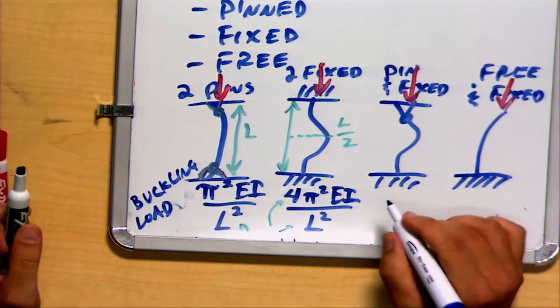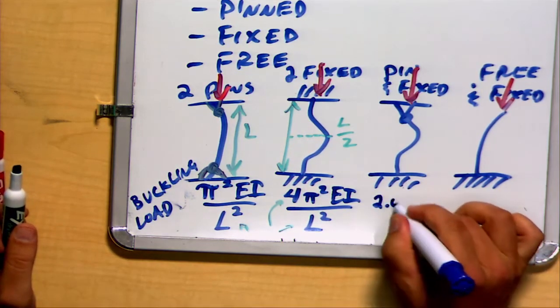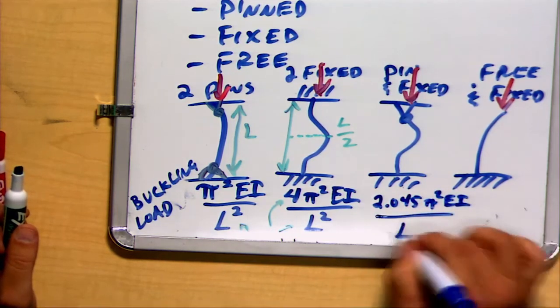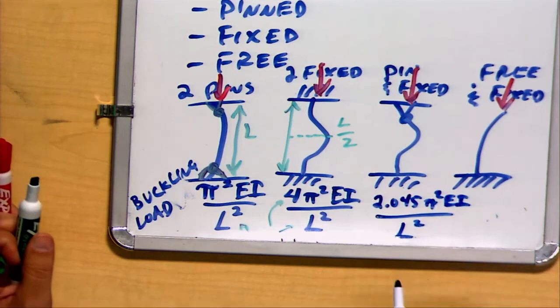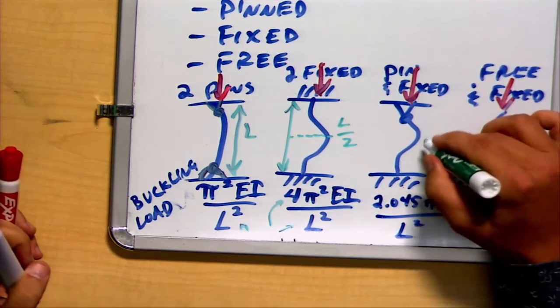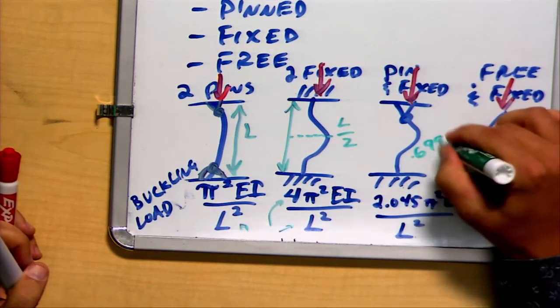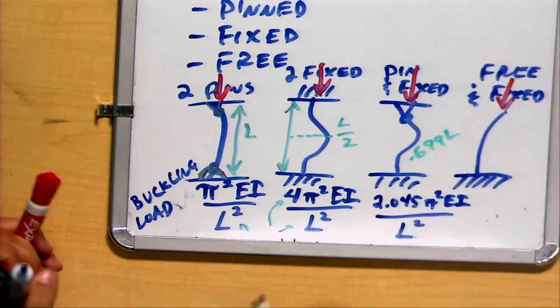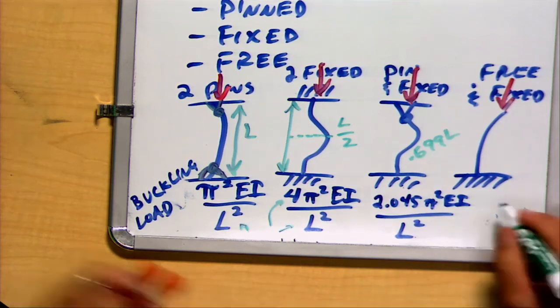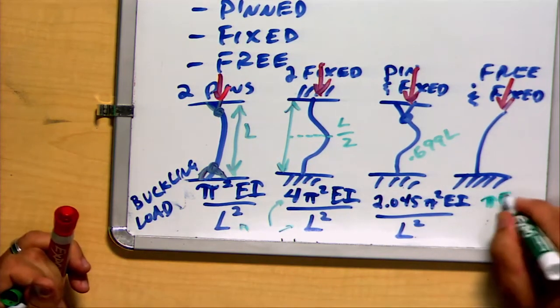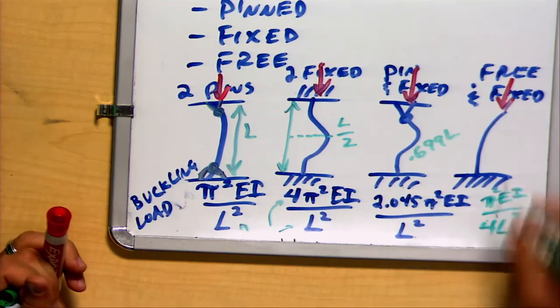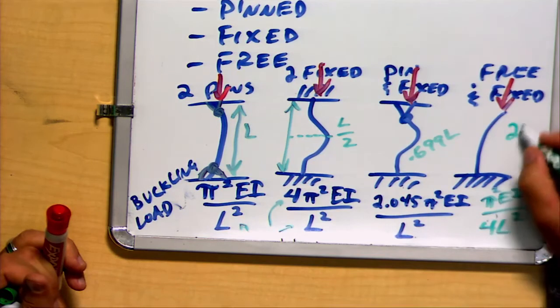In the case of the pin in the fixed, 2.045 pi squared EI over L squared. This is a critical value that's been observed. And the effective length in this case is 0.699L. And in the final case of the free end, you end up with pi squared EI over 4L squared, where the effective length is actually two times L.